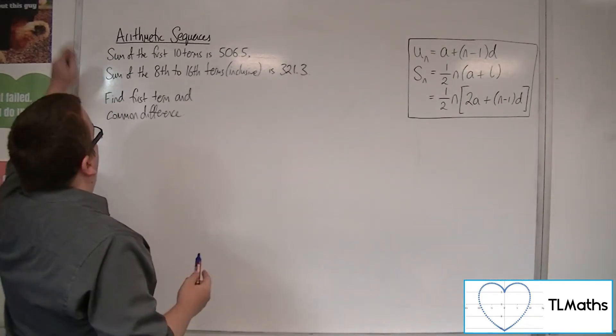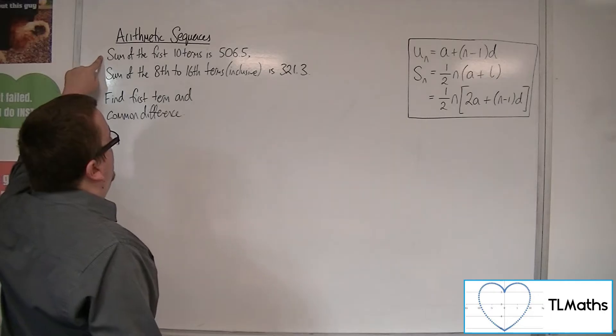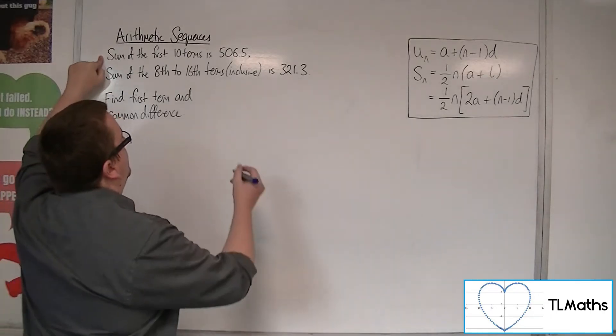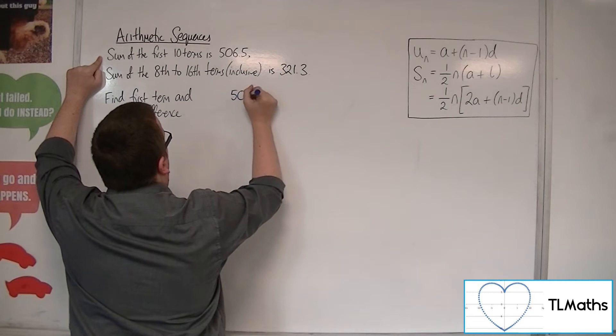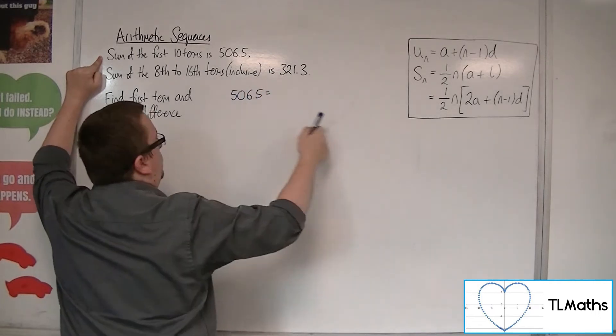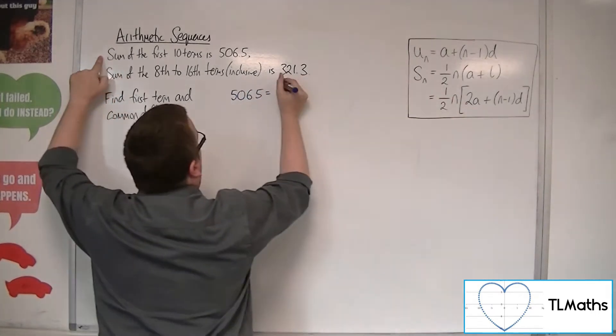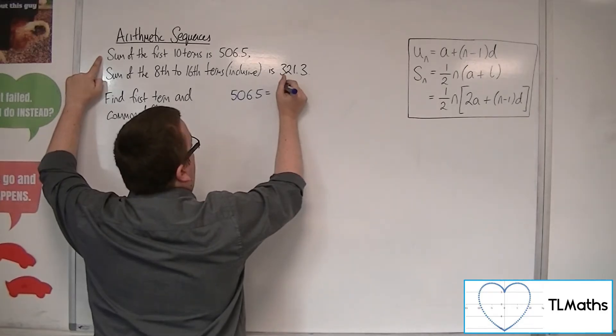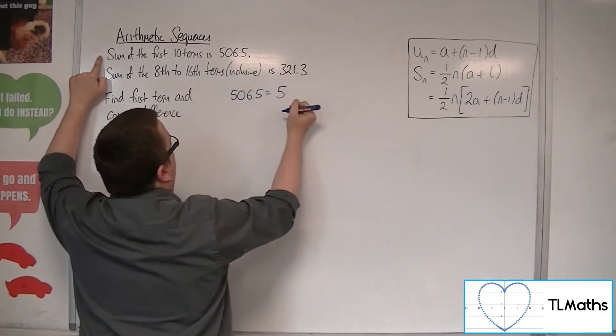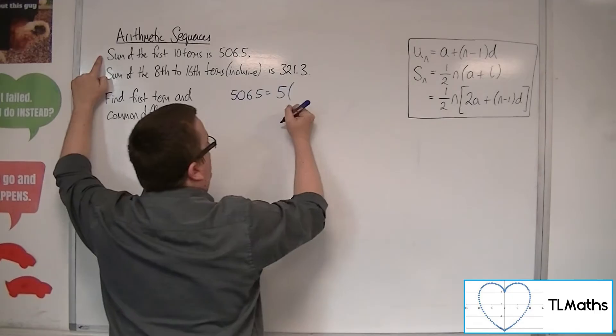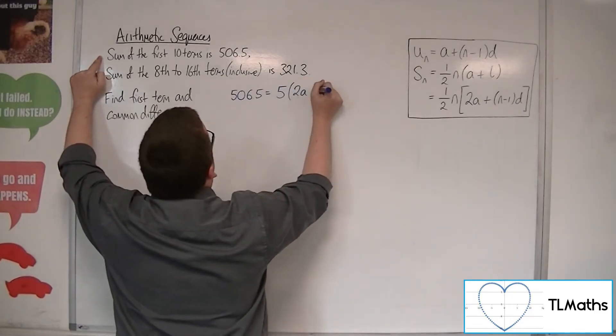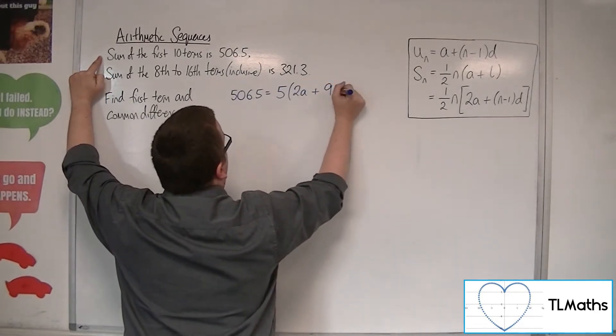So, if I'm told that the sum of the first 10 terms is 506.5, then I can say that 506.5 equals, using this formula, one half of n, which is 5, so half of 10, times 2a plus n minus 1, so 9d.